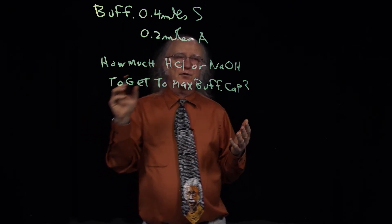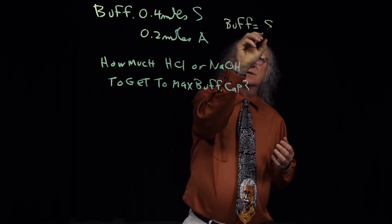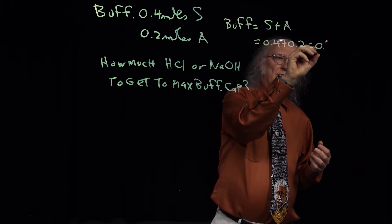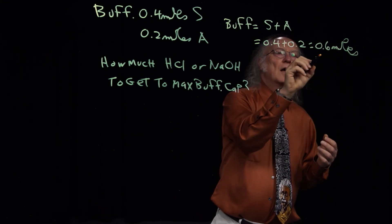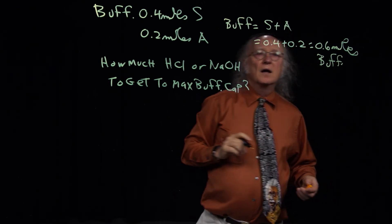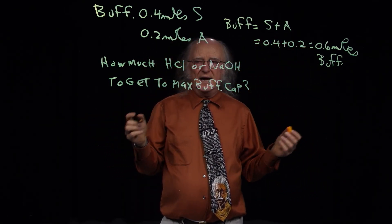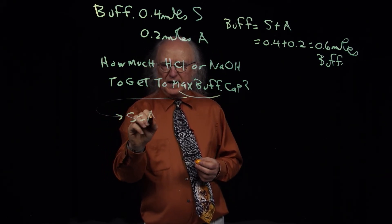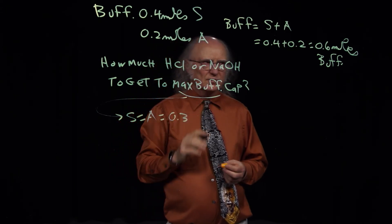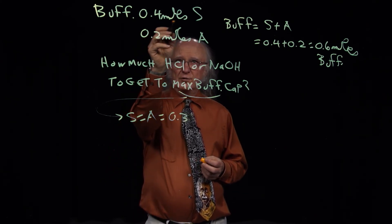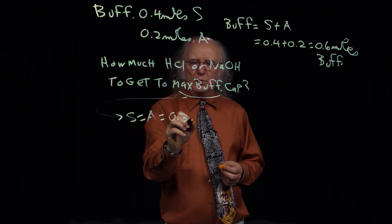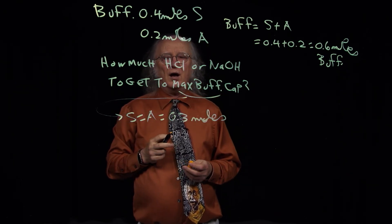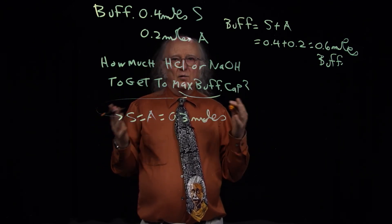The total moles of buffer is 0.4 plus 0.2 equals 0.6 moles. At maximum buffering capacity, salt equals acid, and they each equal 0.3 moles since they must add up to 0.6. So I need to go from 0.4 moles of salt and 0.2 moles of acid to 0.3 moles of each. I need to either add a strong acid or strong base.